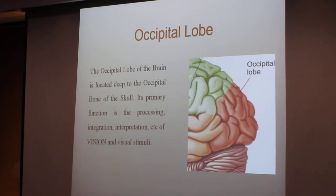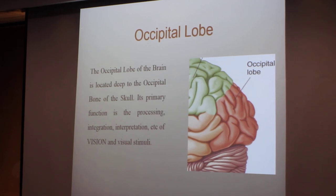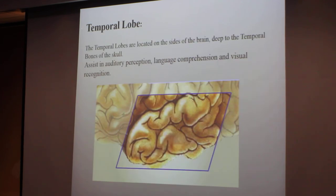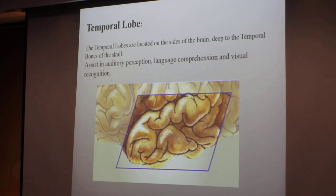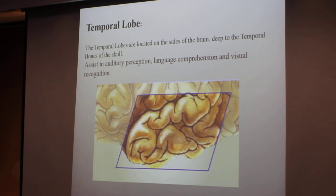The occipital lobe is located deep to the occipital bone of the skull. Its primary function is the processing, integration, and interpretation of vision and visual stimuli — that is the major function of the occipital lobe. The temporal lobes are located on the sides of the brain, deep to the temporal bones of the skull. They assist in auditory perception, language, and visual recognition.